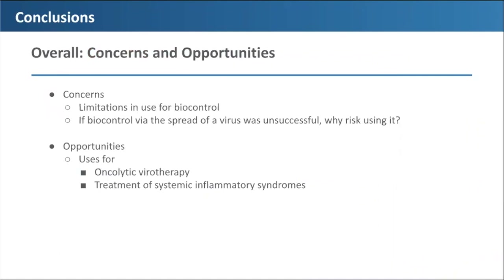In summary, opportunities with myxoma virus include oncolytic virotherapy and treatment of systemic inflammatory syndromes, since the virus can target diverse human tumor cell types and produces immunosuppressive proteins. However, there are also significant concerns, especially around its use in biocontrol. Deliberate introduction into an invasive rabbit population provides the virus with a large reservoir of hosts for quick viral evolution, raising concerns for cross-species transmission in diverse ecosystems. Using myxoma virus as biocontrol led to the evolution of the grade 3 strain — honed to better spread through balancing selection — yet it still failed to solve the invasive species problem. Now a strain best at infecting and spreading exists, raising high concern for its use.